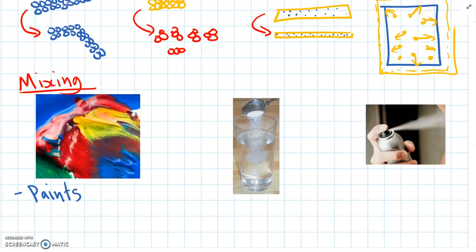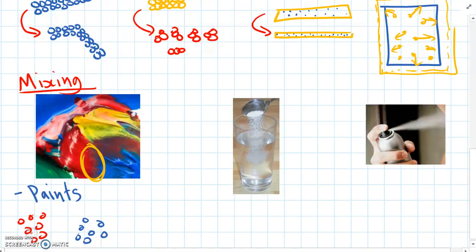So here, we have, if we look down at the bottom of the paint here, we've got a whole lot of blue paint particles, and then a whole lot of red paint particles. And when we mix them together, they still stay as the same type of particles, but they all randomly combine together.